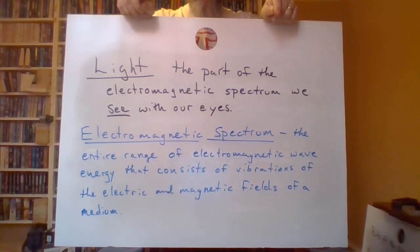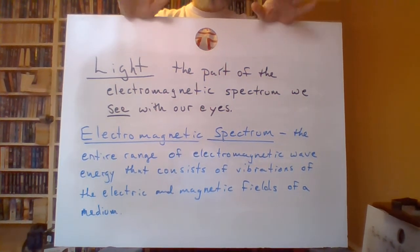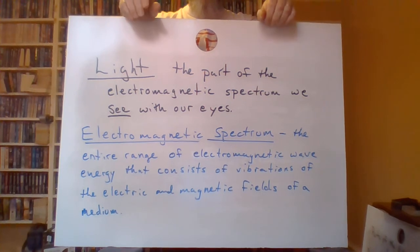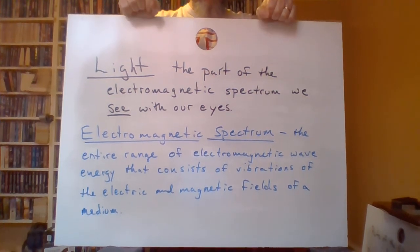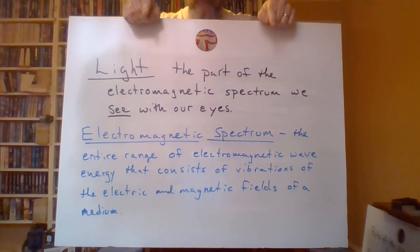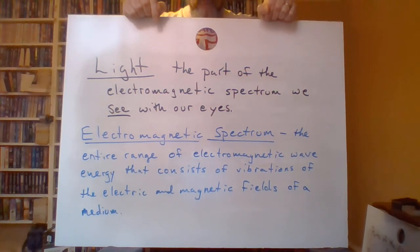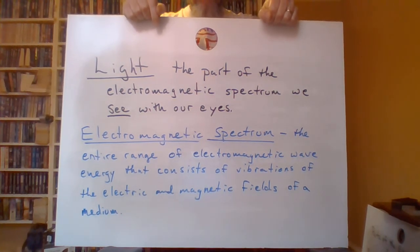Light is the part of the electromagnetic spectrum that we see with our eyes — the part of the electromagnetic spectrum that we perceive, that we experience with the organ on our body that happens to be our eyes. Interestingly, the stuff that we see is only a small, small, small fraction of the entire electromagnetic spectrum.